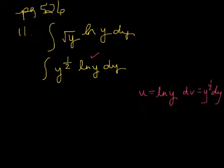Now get the other two pieces. The derivative of u, remember the derivative of a natural log is 1 over whatever you have there, times dy. Anti-derivative of y to the one-half to get me v, that's y to the three-halves times two-thirds.